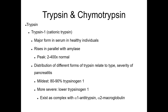Trypsin and chymotrypsin: trypsin-1 is the major form in serum of healthy individuals. Rises parallel amylase and peak at 2 to 400 times the normal reference range. The distribution of different forms of trypsin relates to the type and severity of pancreatitis — the mildest cases show 80 to 90 percent trypsinogen-1, while more severe cases show lower trypsinogen-1. Trypsin exists as a complex with alpha-1 antitrypsin and alpha-2 macroglobulin.